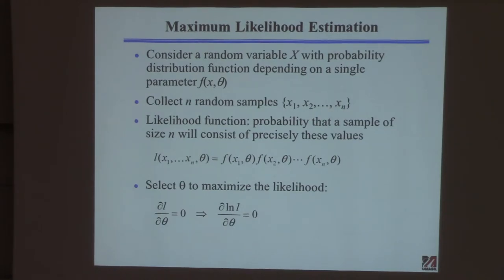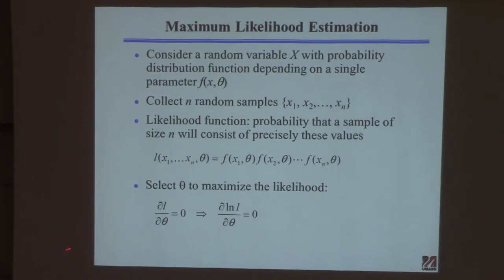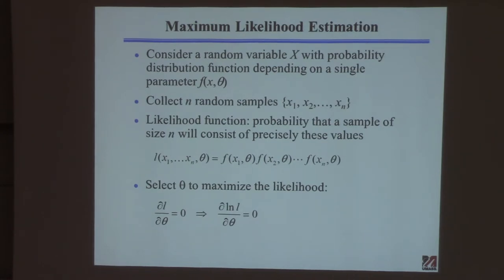If you know anything about calculus — which I know you do — if you have a function and you'd like to maximize or minimize it, you take the derivative and set it equal to zero. We're going to take the likelihood function, take the derivative with respect to the parameter theta, and set that equal to zero. Maximizing the derivative of the likelihood is the same as maximizing the log of the likelihood — they give you the same answer for theta. It's going to be easier sometimes to work with the log of the likelihood function, especially if you're working with the Gaussian distribution. The main thing to take away from maximum likelihood is the basic idea of why this makes sense and what the likelihood function represents.